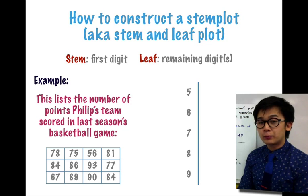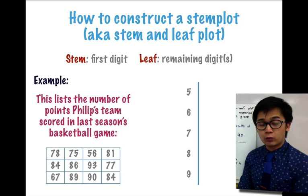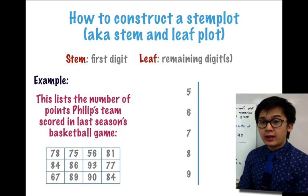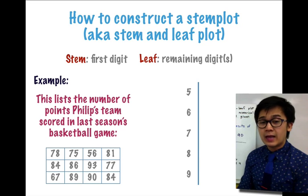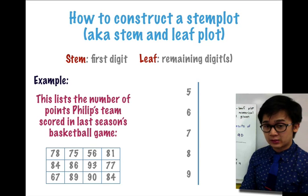And then the leaf or the remaining digit will be the second digit in the last season of Philip's basketball game.